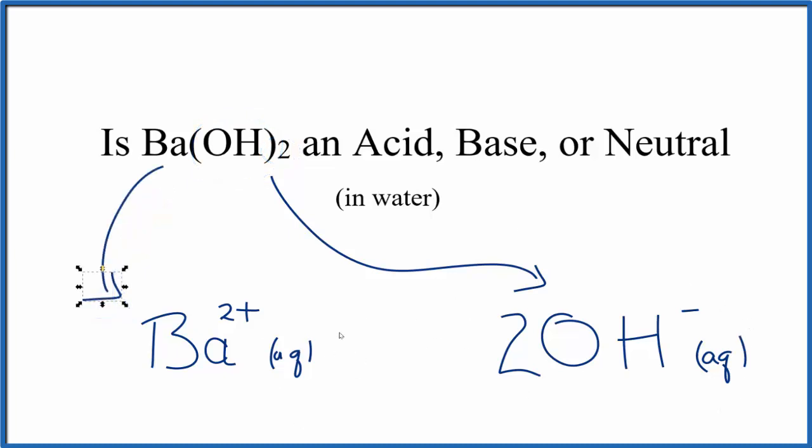So barium hydroxide, we put it in water and it dissociates into the barium ion and the hydroxide ions. So therefore, barium hydroxide, it's a base and it's also considered a strong base. This is Dr. B. Thanks for watching.